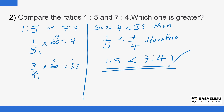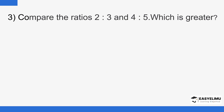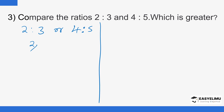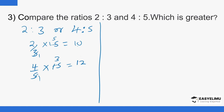Here is another example: two is to three or four is to five — which one is greater? We express them as fractions: two over three and four over five. We multiply both by the LCM, which is 15. For 2 over 3: 15 divided by 3 is 5, and 5 times 2 is 10. For 4 over 5: 15 divided by 5 is 3, and 3 times 4 is 12.